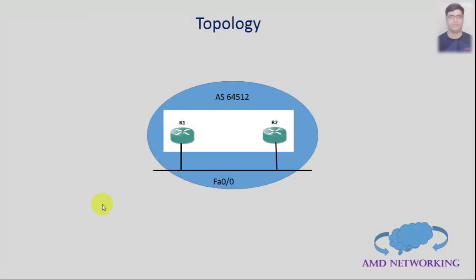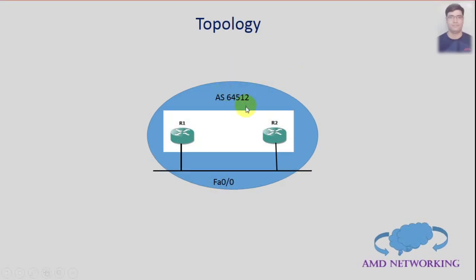Here is the topology for our practical lab. Router 1 is connected to Router 2 via FastEthernet 0/0, using AS number 64512. The remote AS number is the same, so they form an IBGP neighbor relationship. Let's start the lab, configuring BGP and running all verification and debug commands.